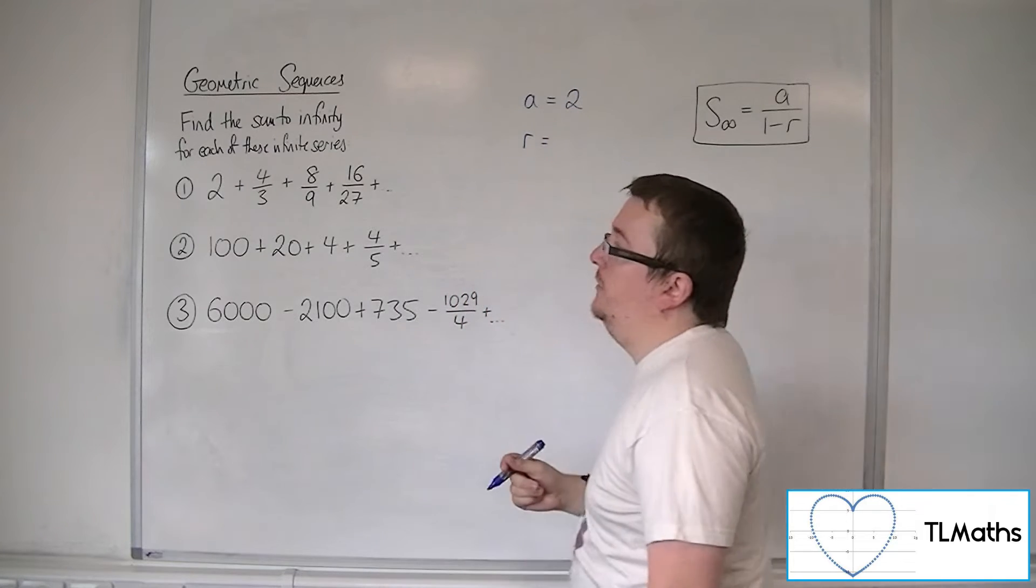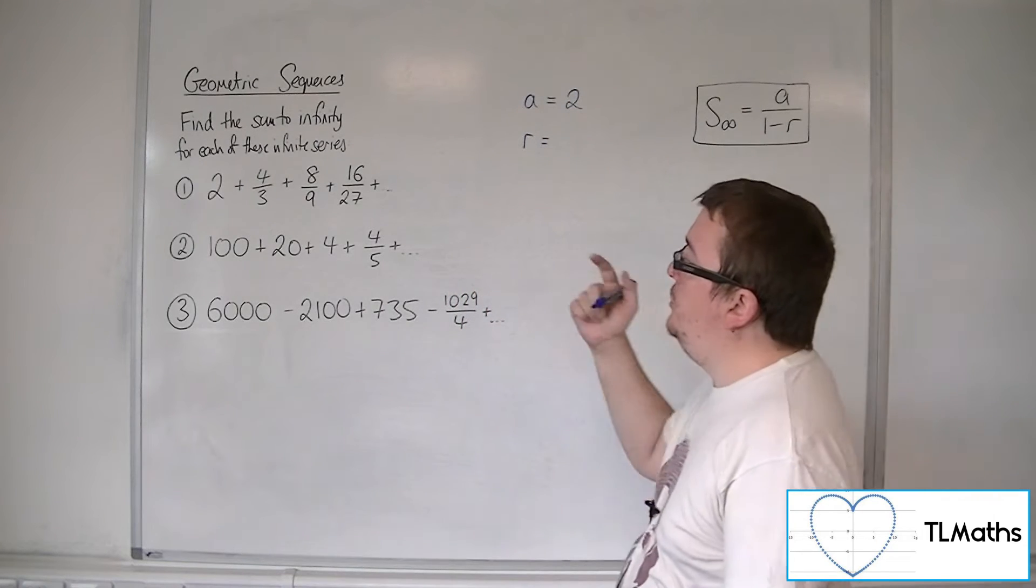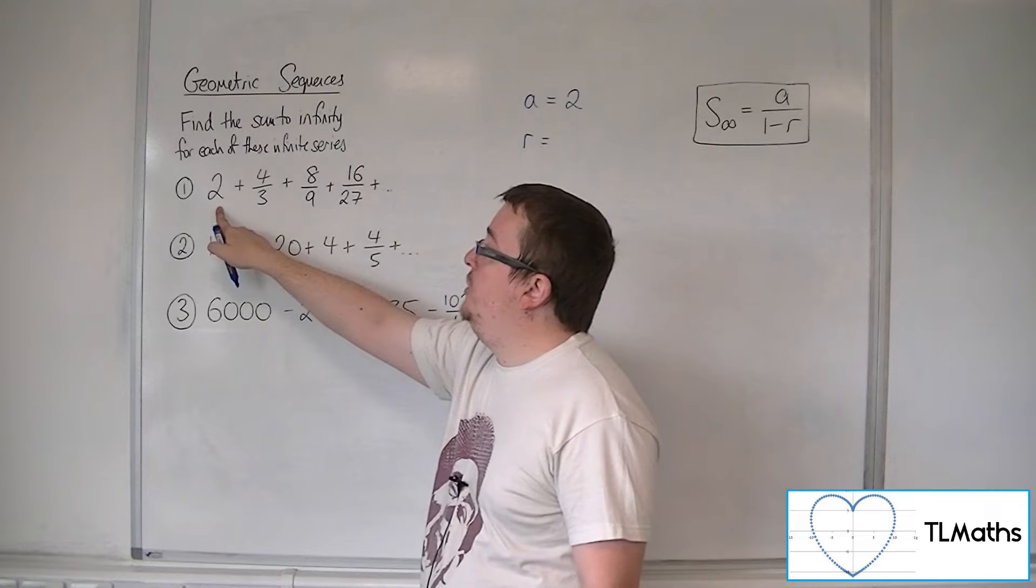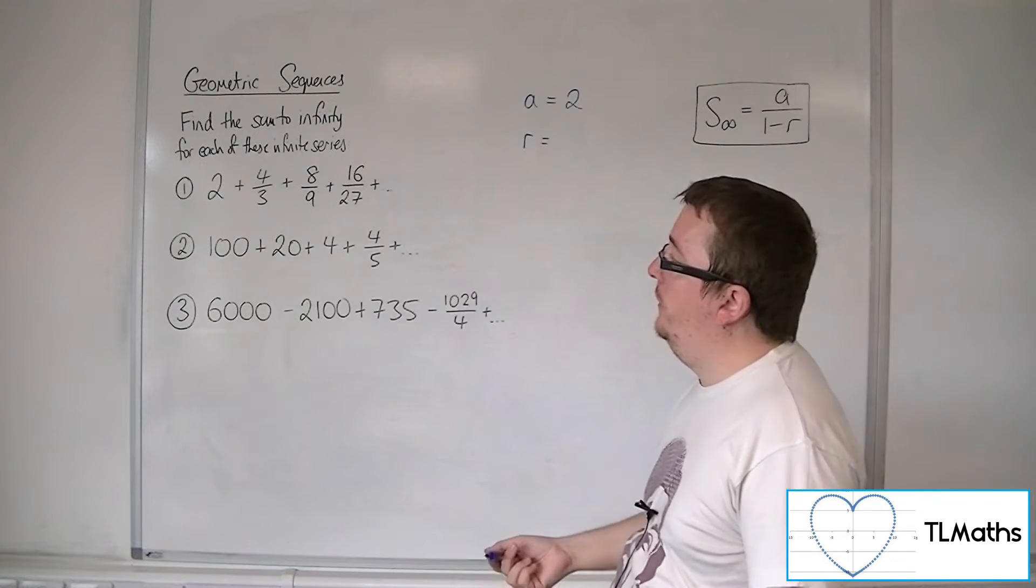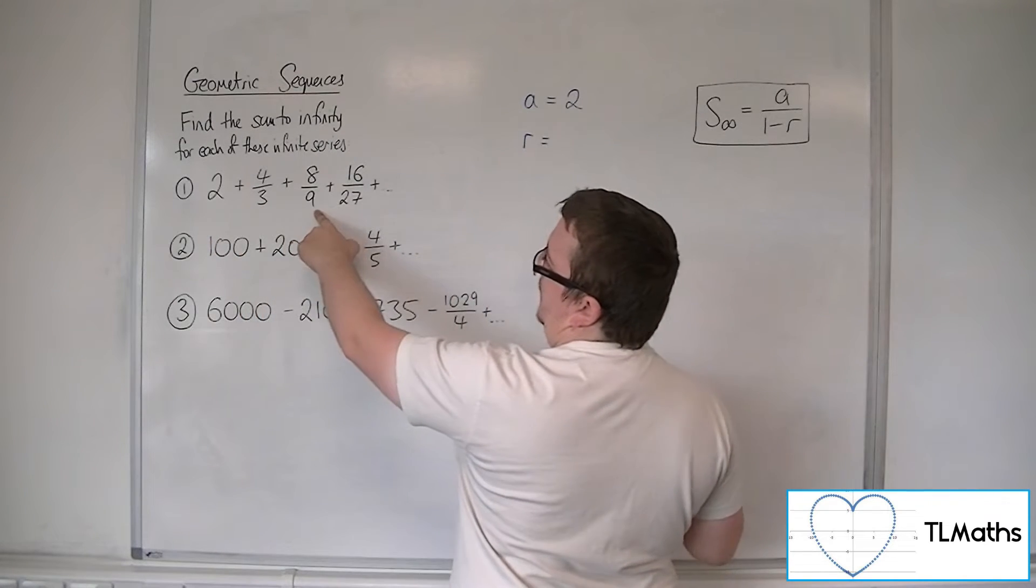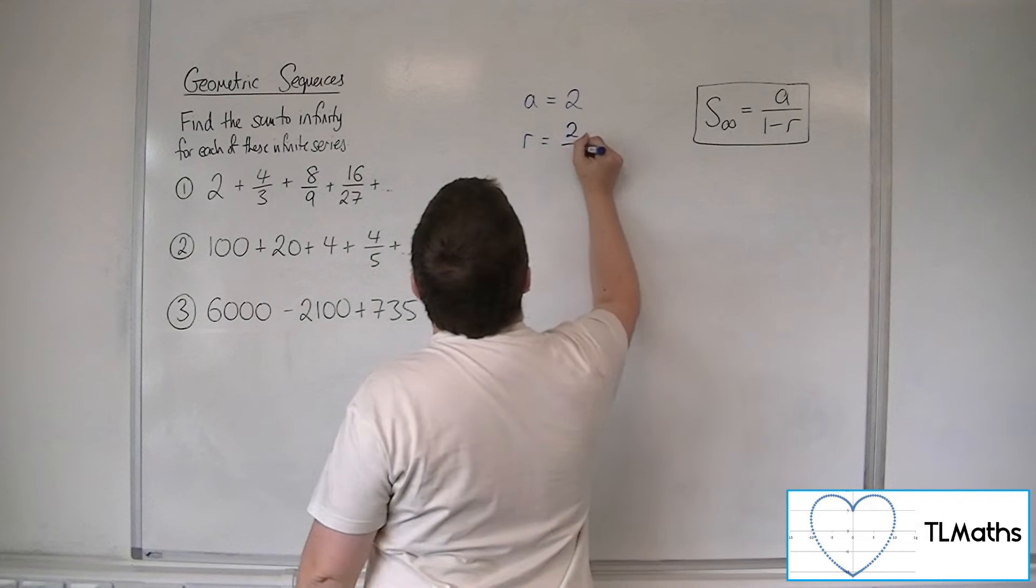Now the common ratio perhaps isn't so obvious. You can do 4 thirds divided by 2, which is 2 thirds, or you can just spot that 4 thirds times 2 thirds will make the 8 ninths. So that's your common ratio.